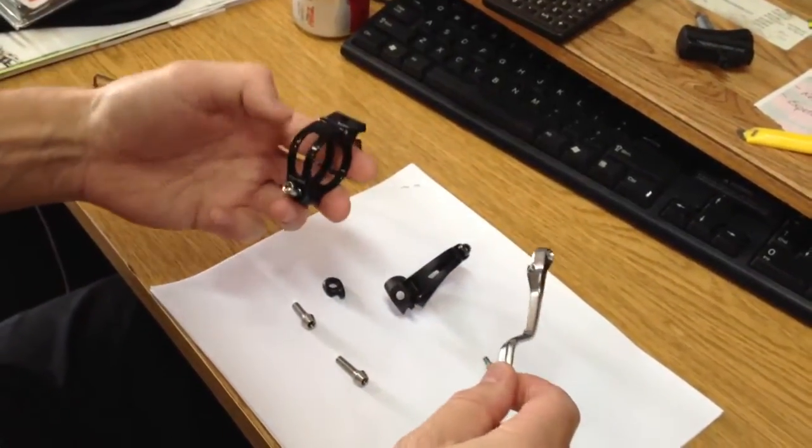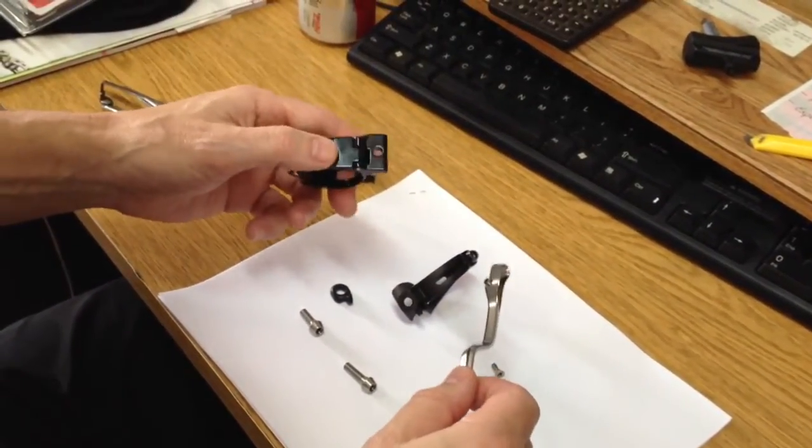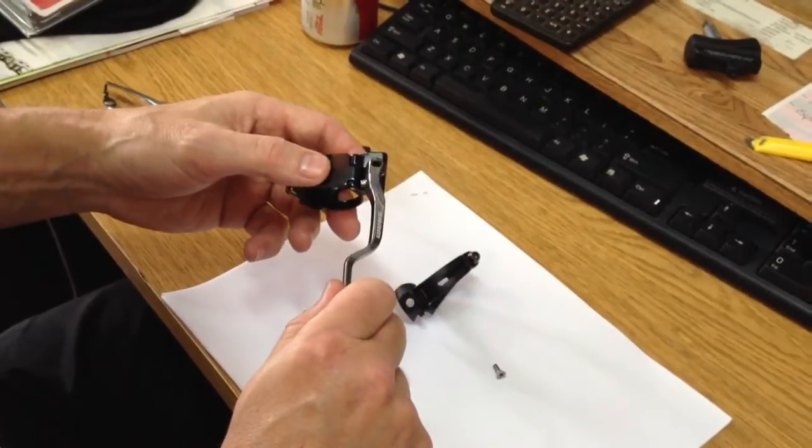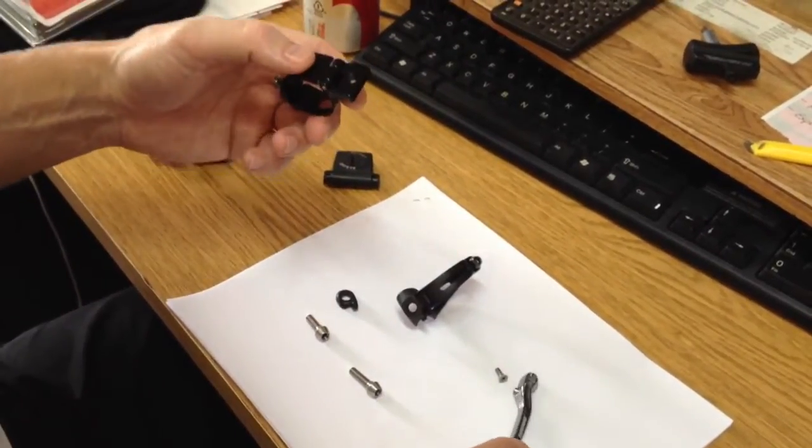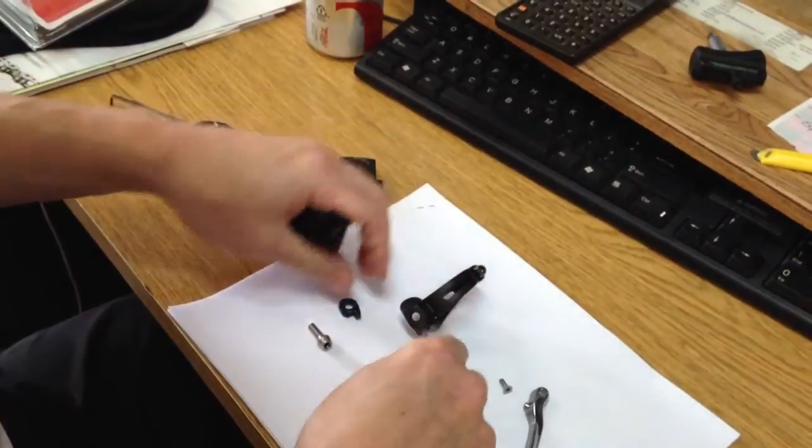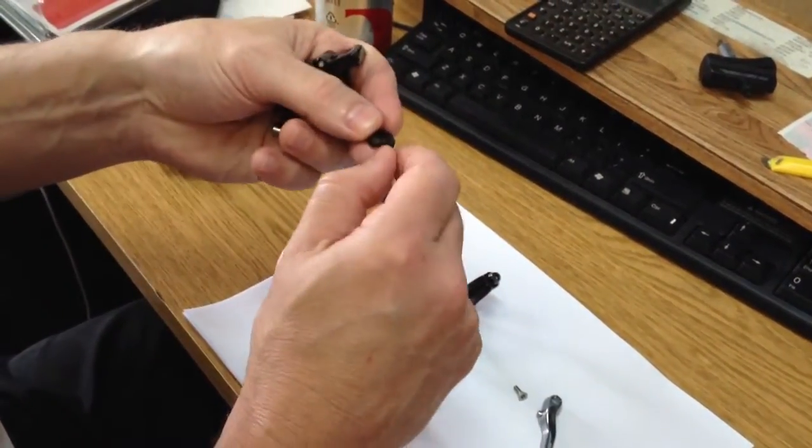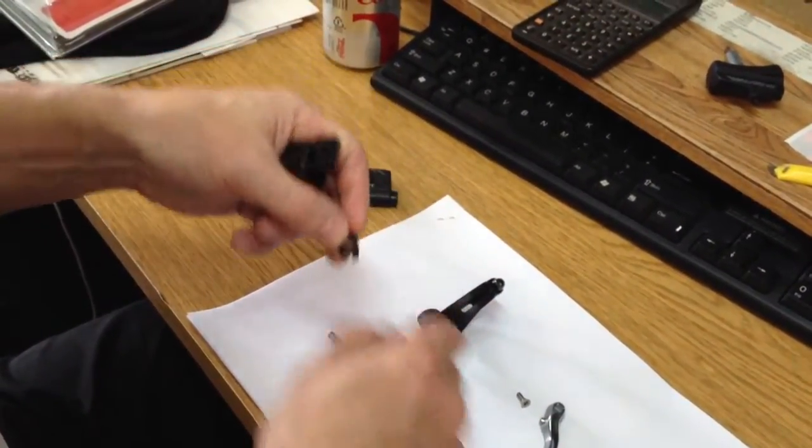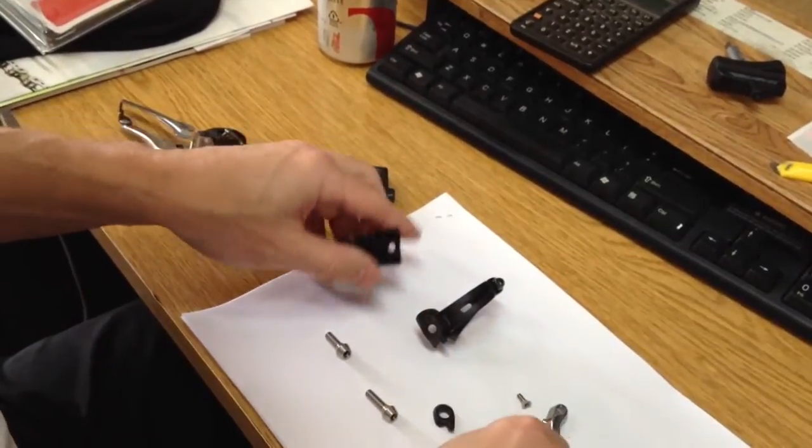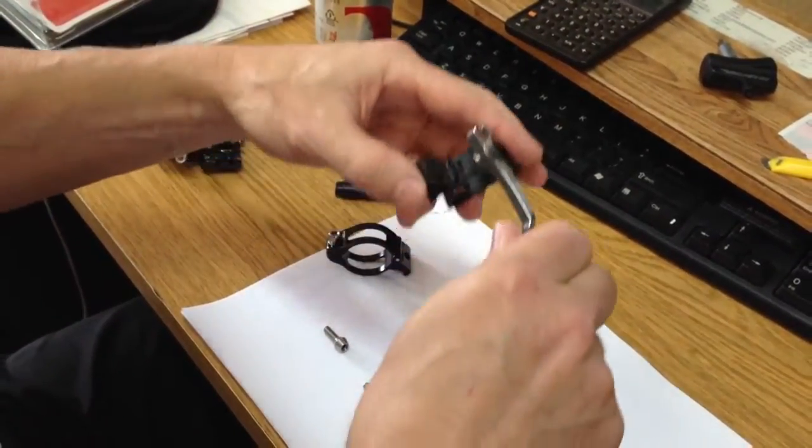The problem with attaching it to the existing front derailleur clamp is that it's missing this little surface right here. When you look at the new clamp adapter...